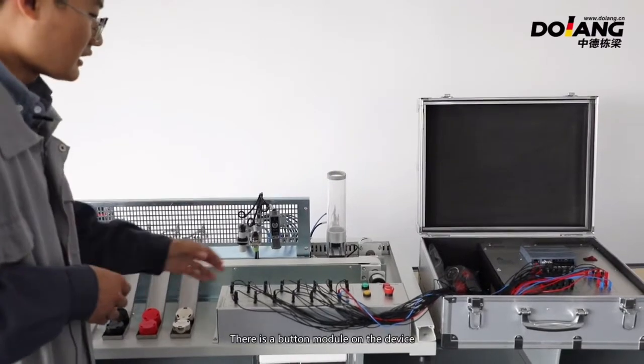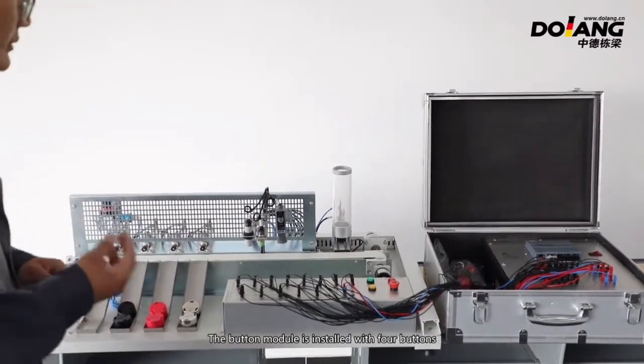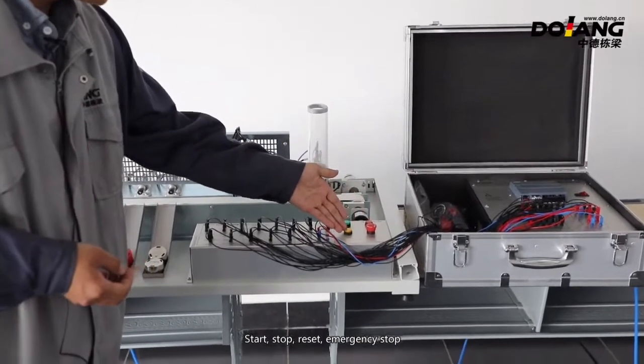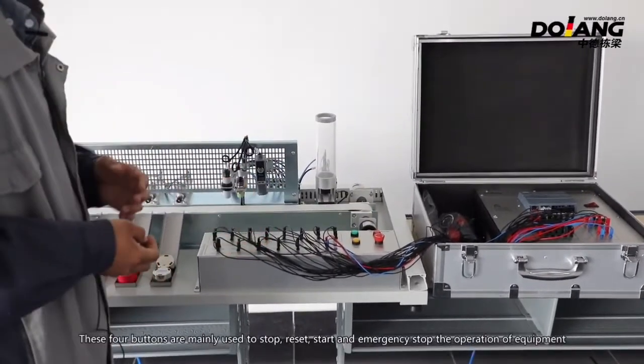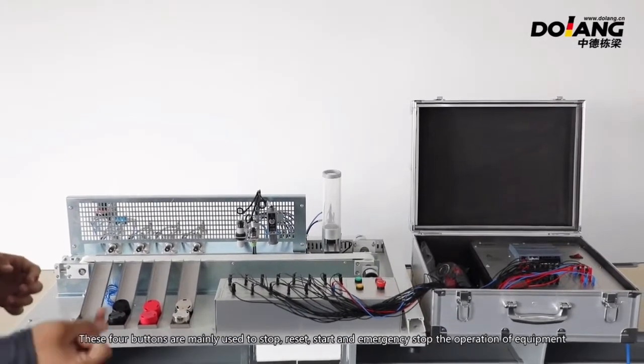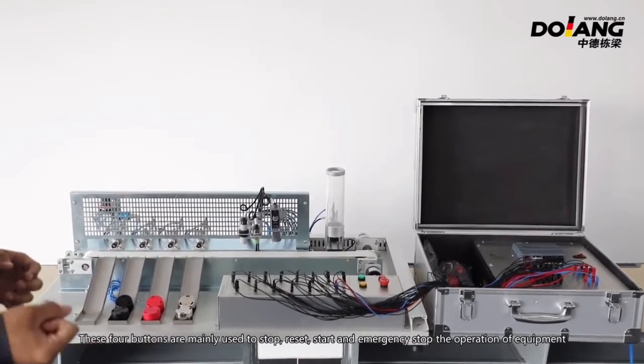There is a button module on the device. The button module is installed with four buttons: start, stop, reset, and emergency stop. These four buttons are mainly used to start, stop, reset, and emergency stop the operation of the equipment.